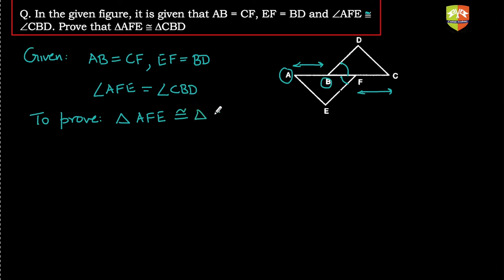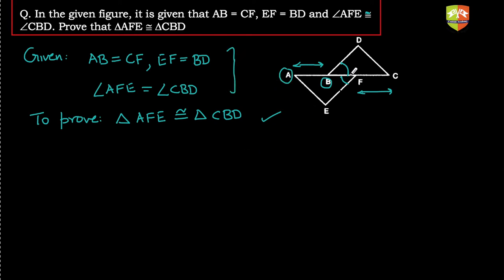We need to prove that triangle AFE is congruent to triangle CBD, meaning angle A equals angle C, angle F equals angle B, and angle E equals angle D. In such questions, assume the conclusion is true and work backwards to check whether you arrive at the given conditions.